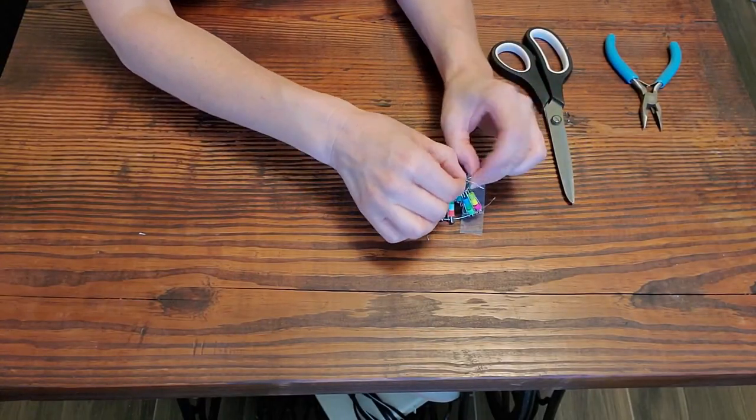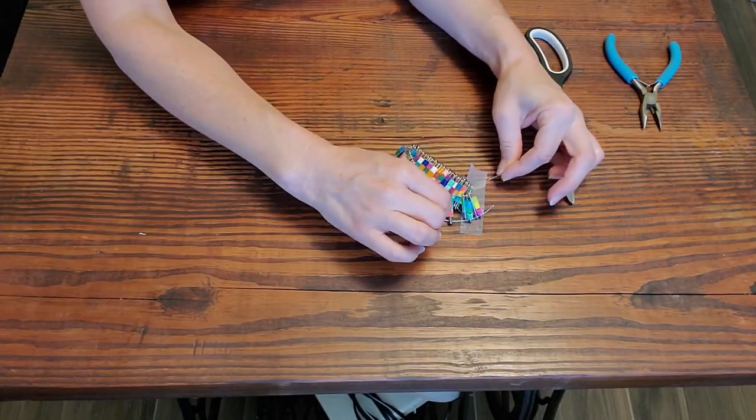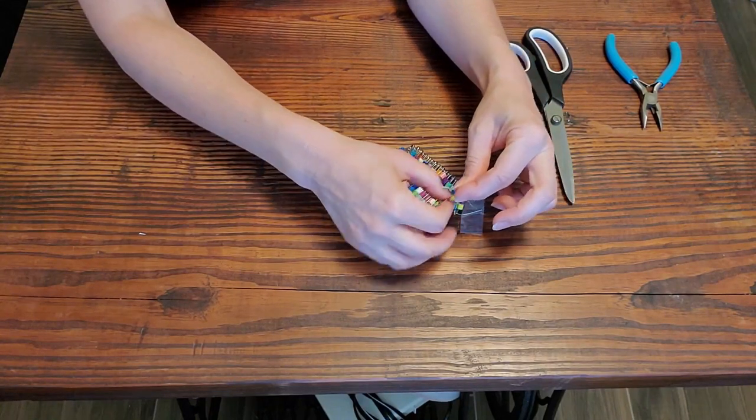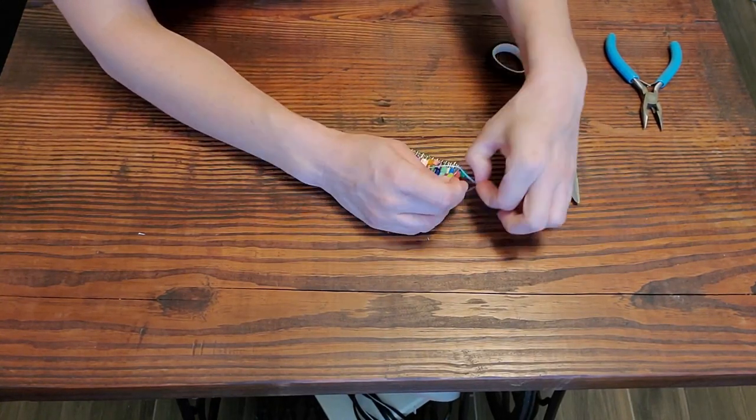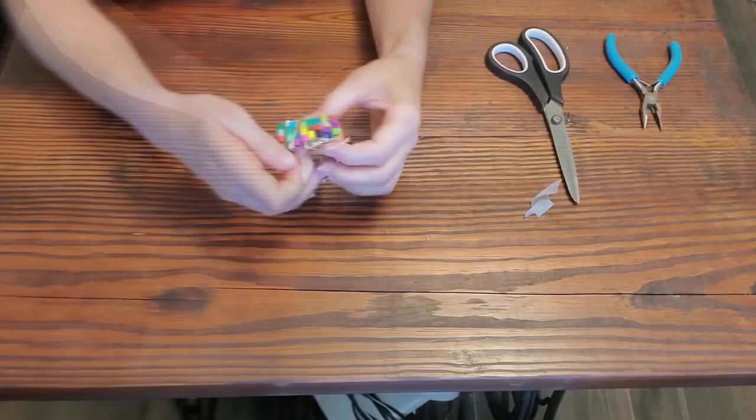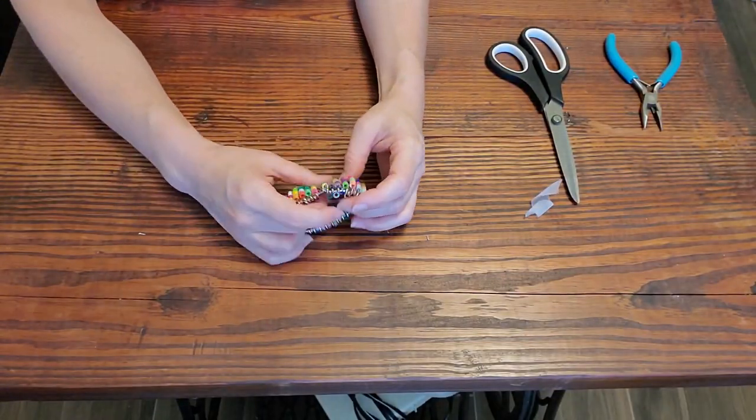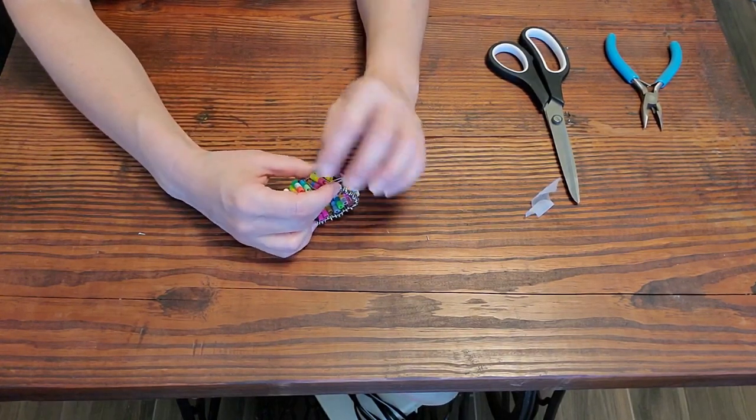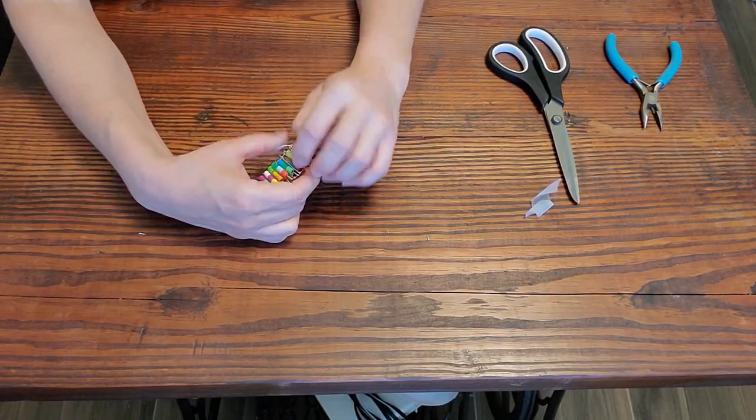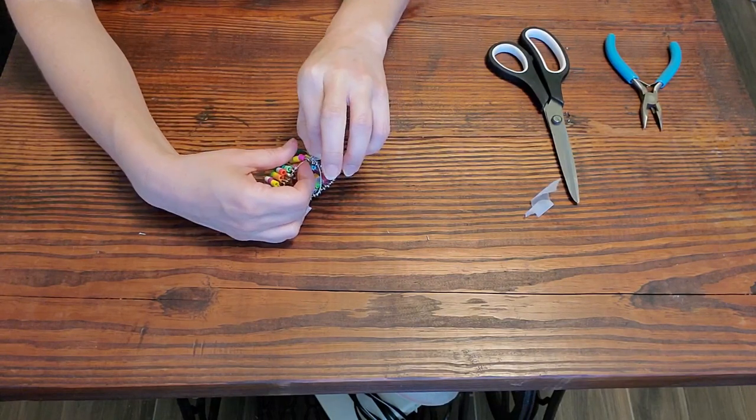Maybe triple knotting, just in case. And then I'm going to take the other side and tie that together. Now, I can either cut my string here, or I can also try to weave it back through, and I might try to weave it back through just once or twice.